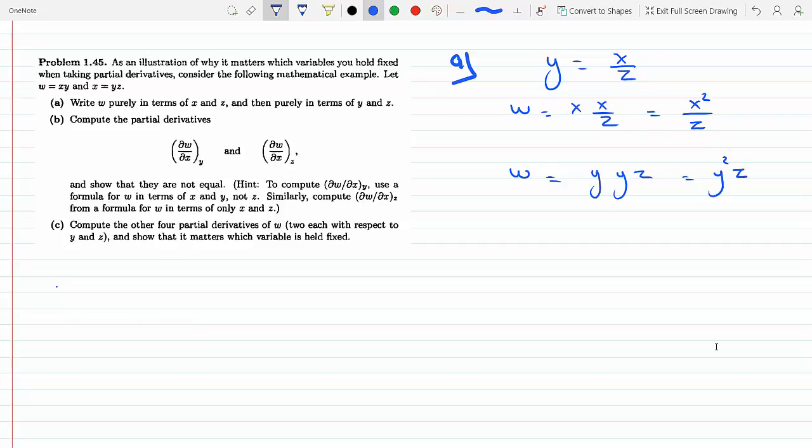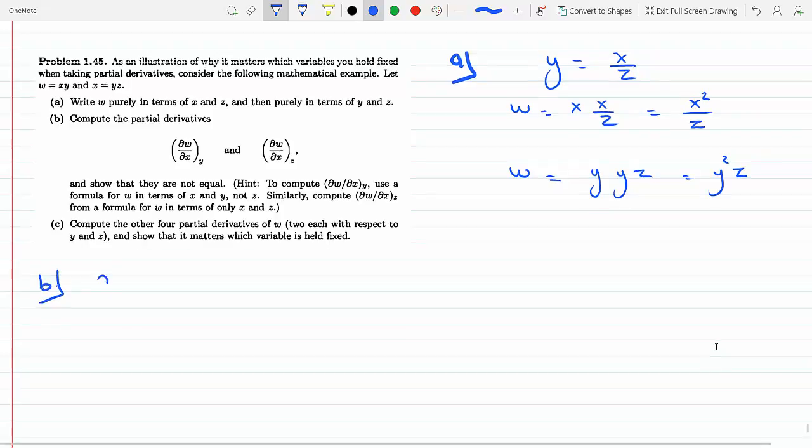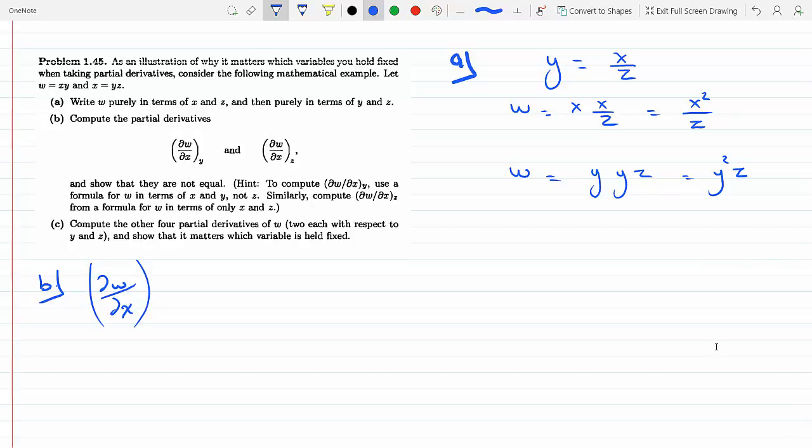Now for part B, compute the partial derivatives. Part B: compute the partial derivative ∂W/∂X, and this means we are holding Y fixed. We'll go to that equation. If you differentiate W with respect to X from the original equation W equals XY, if you hold Y fixed, then the answer will just be Y.